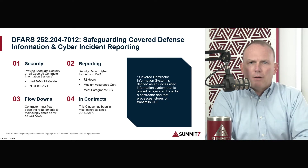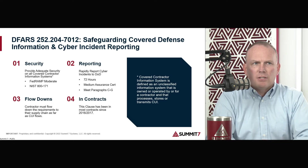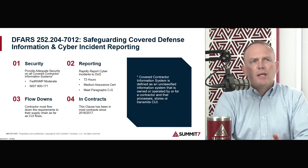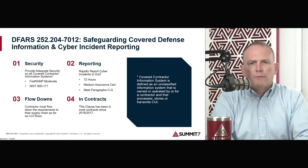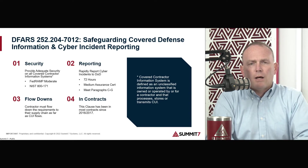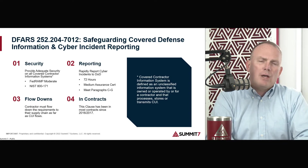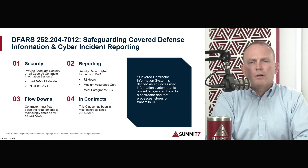Four main points about this clause. First, the entire point was to ensure that contractors were providing adequate security for their covered contractor information system. Adequate security means implementing the NIST 800-171 R2 framework within your IT environment — that's 110 security controls implemented to protect against various types of threats. If you're going to be using cloud-based systems, DFARS 7012 requires FedRAMP moderate or FedRAMP moderate equivalent cloud service providers. Anything in the cloud where you're handling controlled unclassified information must be FedRAMP moderate or higher — the higher standard being FedRAMP high.